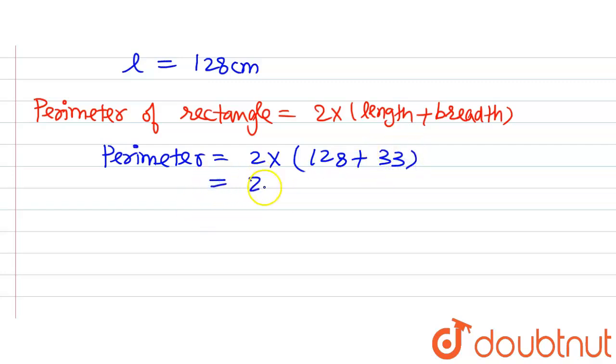This will be equal to 2 × 161 which will be equal to 322 cm.